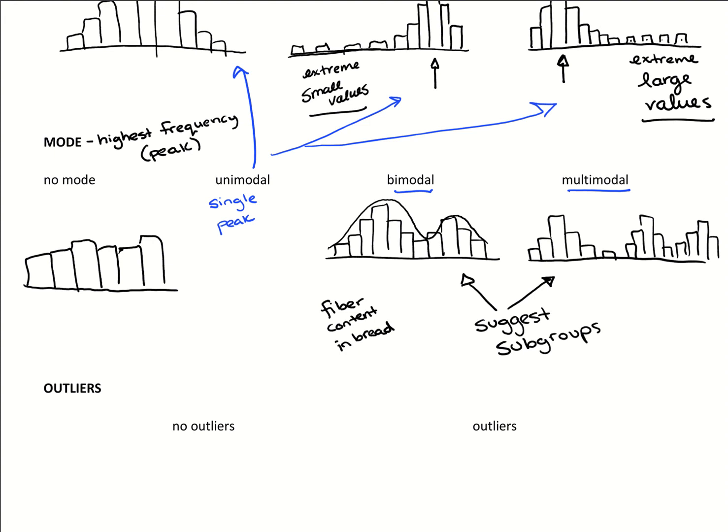What we might see is something maybe either bimodal or multimodal when we do that. And why that is, is because some bread is high fiber, some bread is low fiber. So it might be something like we'd see wheat would group up higher on the number line, and then white bread would land lower on the number line.